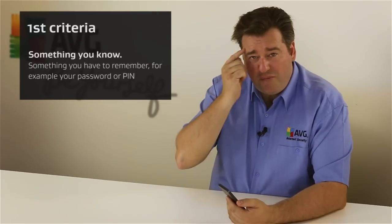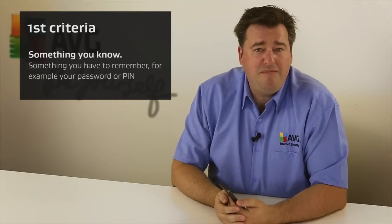Let's look at the history of access control just briefly and understand where two-factor authentication actually came from. In the security industry we talk about access control — the ability to access an online service — and this is typically done using three techniques or three criteria. The first criteria is something you know, which would be your password that you generally have to remember.